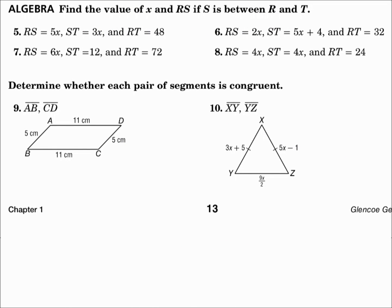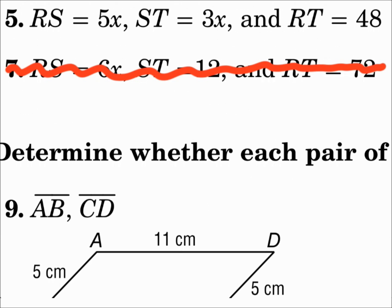Find the value of X and the measure of segment RS if S is between R and T. If S is between R and T, then it's drawn like this, and the two parts add up to equal the whole thing. The two parts are 5X and 3X. Those are RS and ST. They add up to the whole thing, RT, and that's 48.